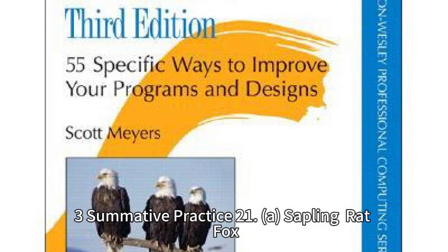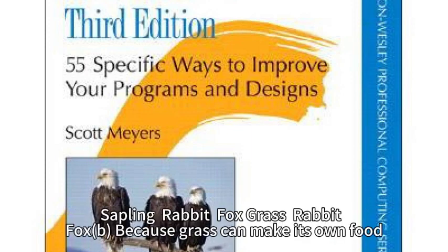Summative Practice answers: Food chains — Sapling, Red Fox. Sapling, Rabbit, Fox. Grass, Rabbit, Fox. B. Because the grass cannot sustain the food chain.